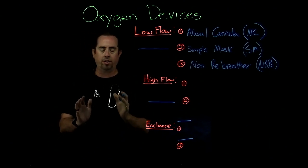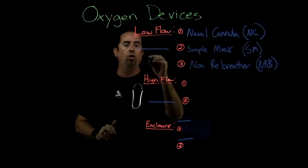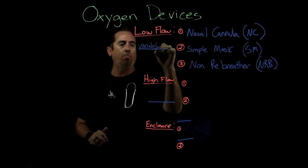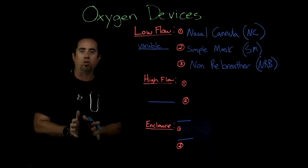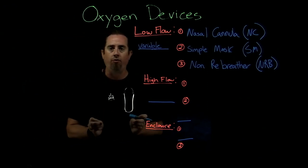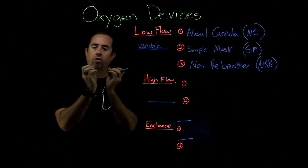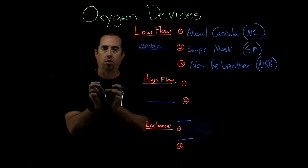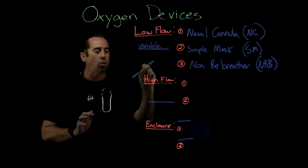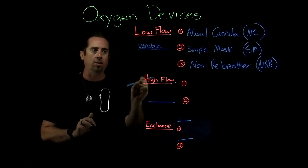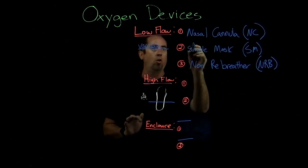Before we go to the next one, I need to call this out: if you need to select one of these masks you need to know when and why. These low flow devices are variable — they're not precise. If you say it's 28% FiO2, that is not a guarantee; it's an estimate. Because of this, we do not chart it in percentage of FiO2 — we chart it in liter flow.